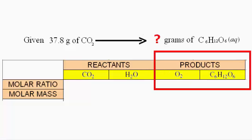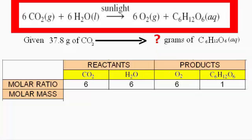Next, I'm looking at the molar ratio of each of the chemical agents. Based on the equation that we were given in the question, we know that for every 6 moles of carbon dioxide, we have 6 moles of water, and in the presence of sunlight, that yields 6 moles of oxygen and 1 mole of glucose.